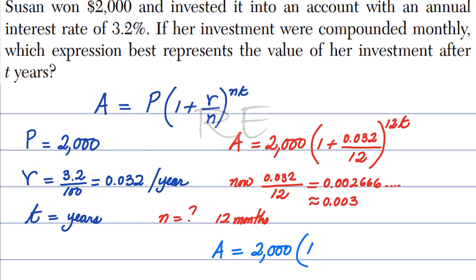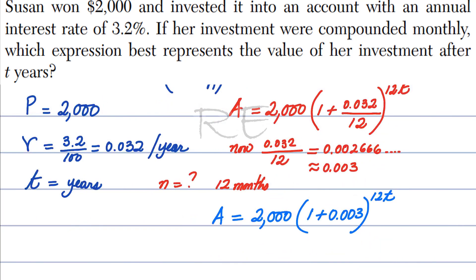Now, our expression becomes 2,000 times 1 plus 0.003, raised to 12t, which is A equals 2,000 times 1.003 raised to 12t. And the correct answer is 1.